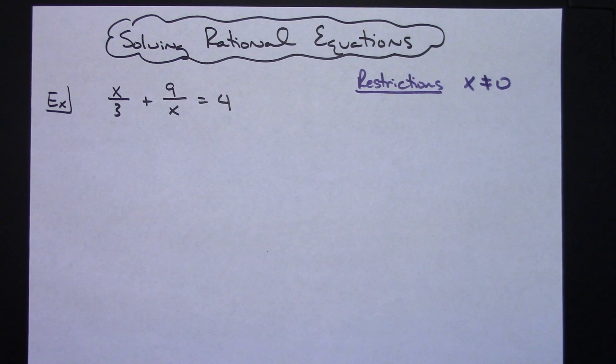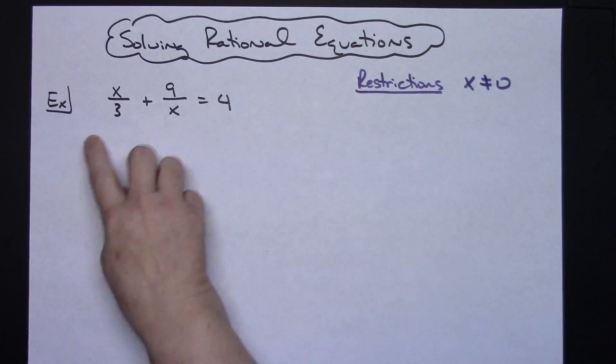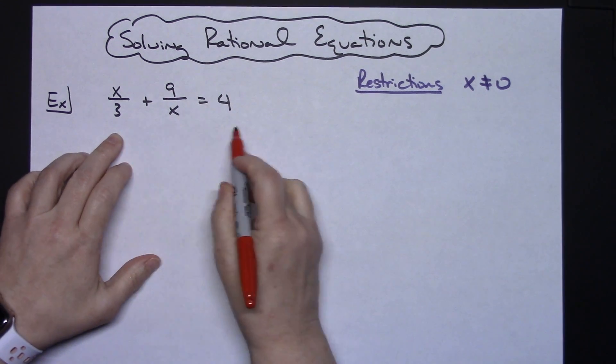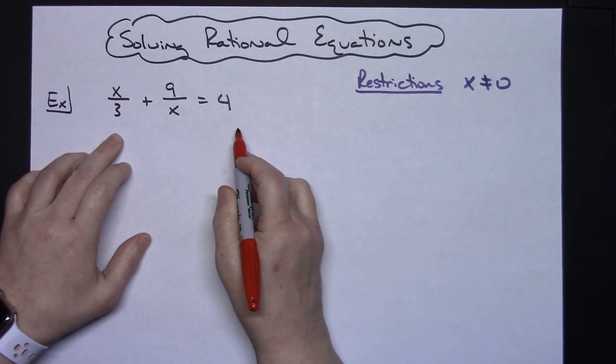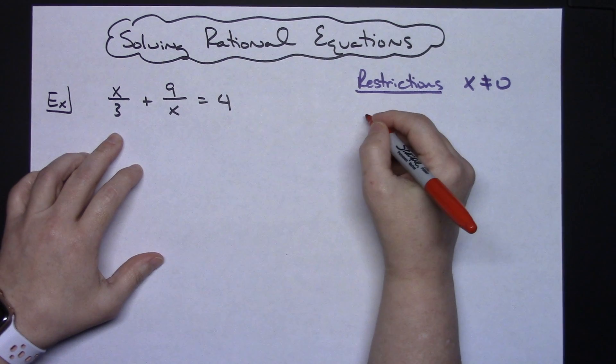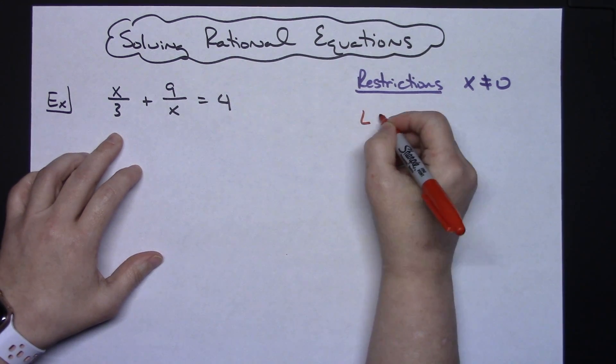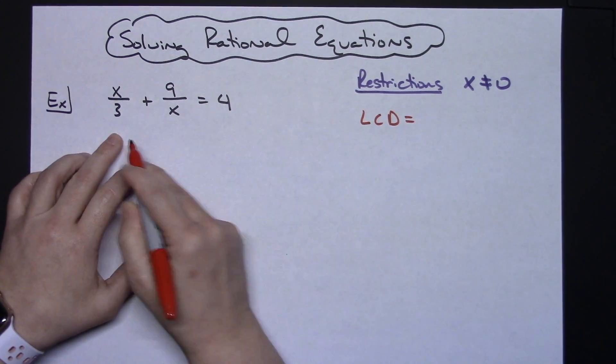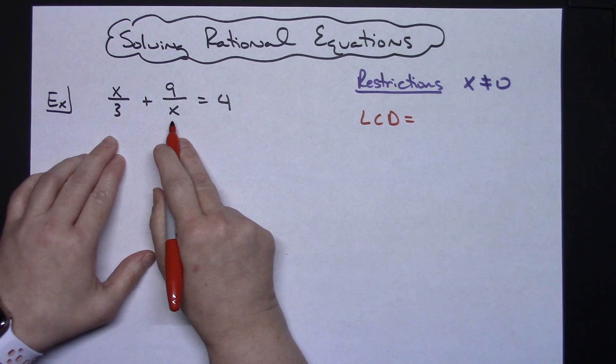Now the next thing I'm going to do is eliminate those fractions. I don't like working with fractions. It's going to make the problem a whole lot easier if we do not have fractions. So I am going to multiply through by the least common denominator. I'm going to look at all my denominators and come up with what the least common denominator is.